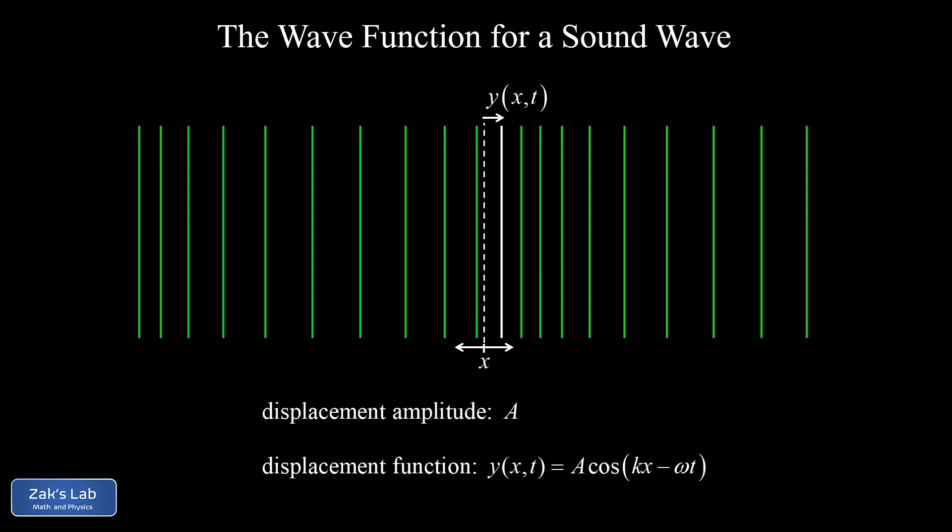When we look at this equation for the wave function, we can get intuition by imagining a fixed x value — we see that the displacement oscillates sinusoidally with time. Or we can imagine a fixed t value, a snapshot in time, and we get sinusoidal oscillations in space, meaning that as we go from left to right, the displacement values of successive lines change according to a cosine function, leading to regions of compression and rarefaction in the wave.